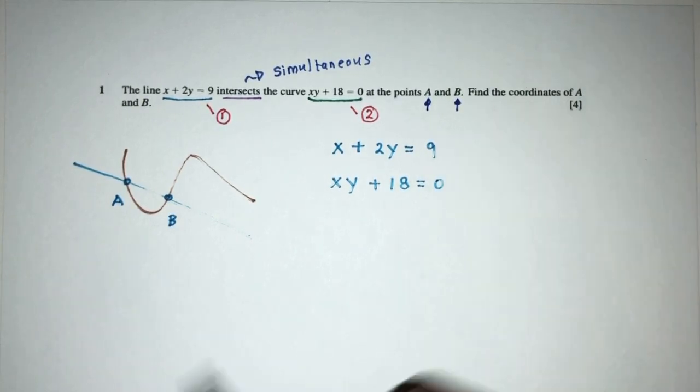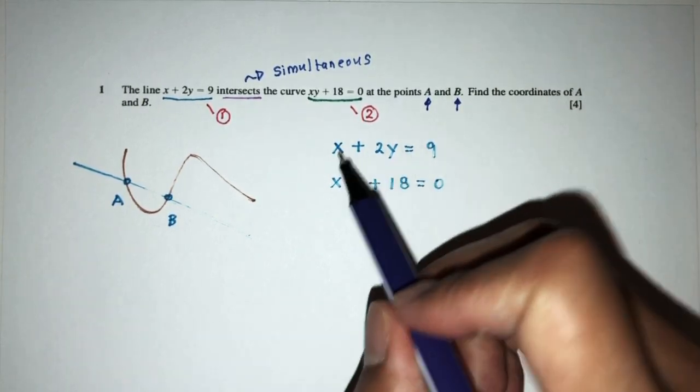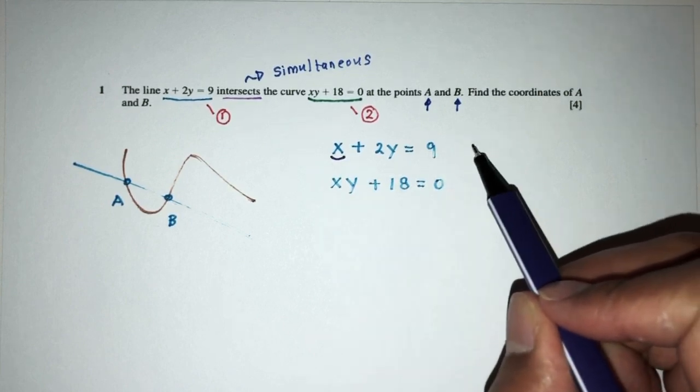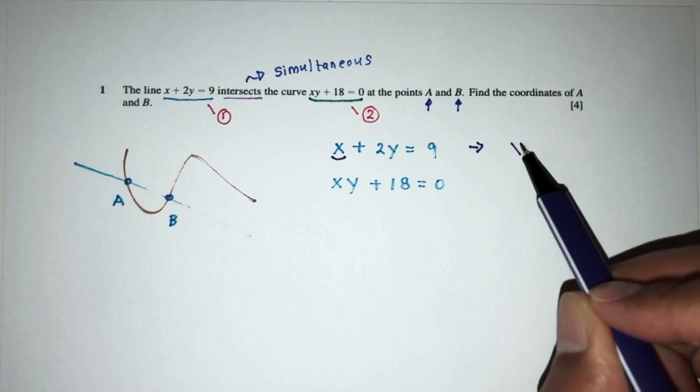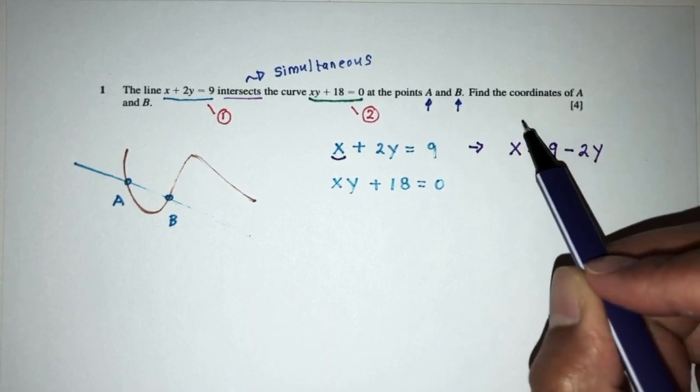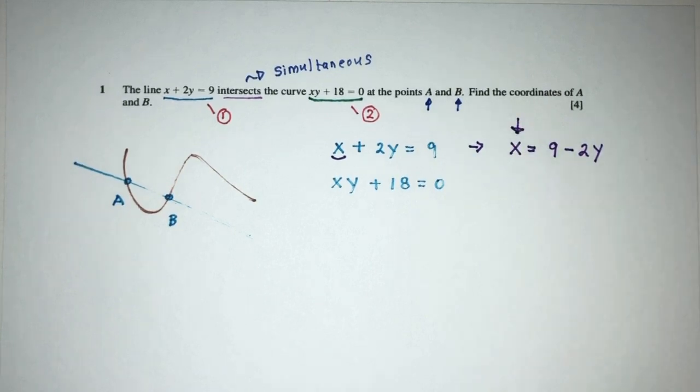Let's begin with the first equation. So, I can see clearly that I can make x become the subject pretty easily. So, that will give me what? From here, I will have x is equal to 9 minus 2y. That is, put my x as the subject of formula.